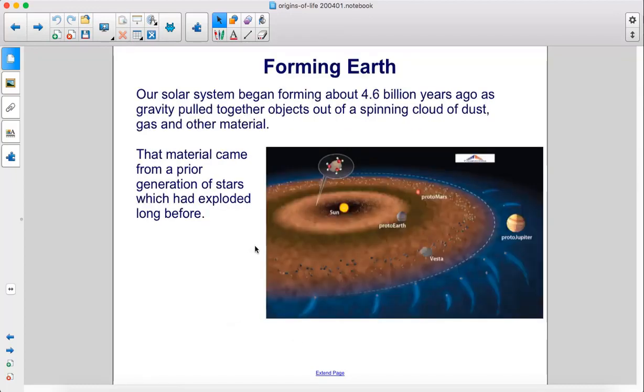Our solar system began forming about 4.6 billion years ago as gravity pulled together objects out of a spinning cloud of dust, gas, and other material. That material came from a prior generation of stars, which had exploded long before.